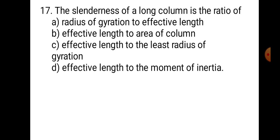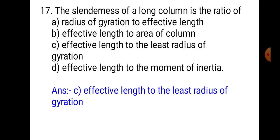Question number 17. The slenderness ratio of a long column is the ratio of: A. Radius of gyration to effective length, B. Effective length to area of column, C. Effective length to least radius of gyration, D. Effective length to moment of area. Slenderness ratio is the ratio of length to radius of gyration. Hence, the correct answer is C, Effective length to the least radius of gyration.